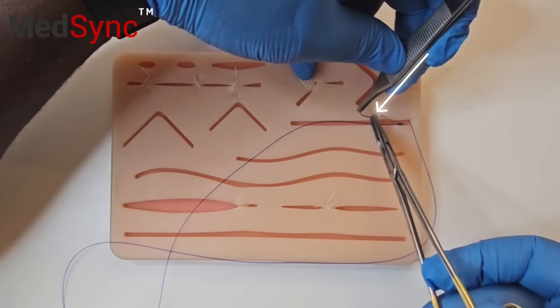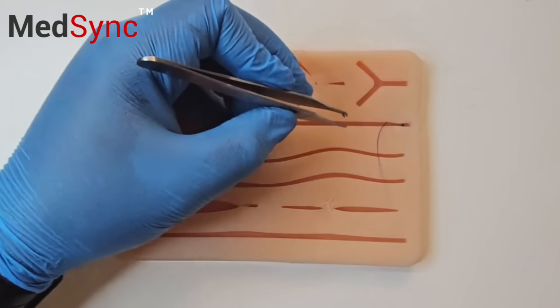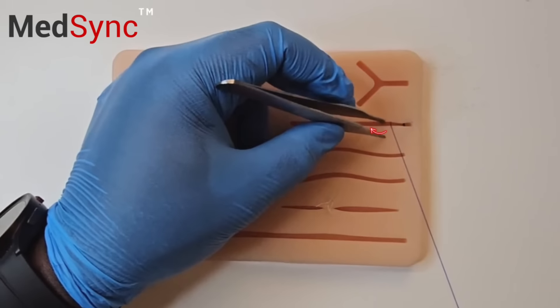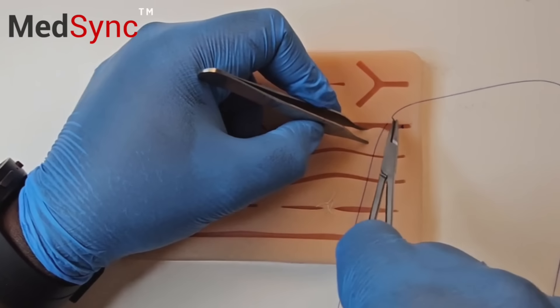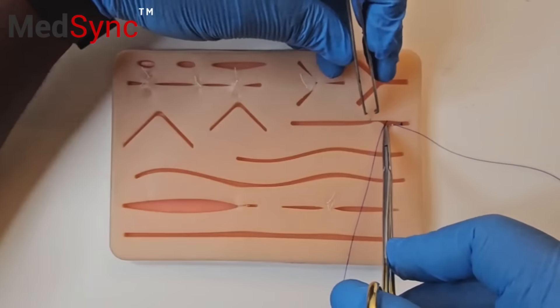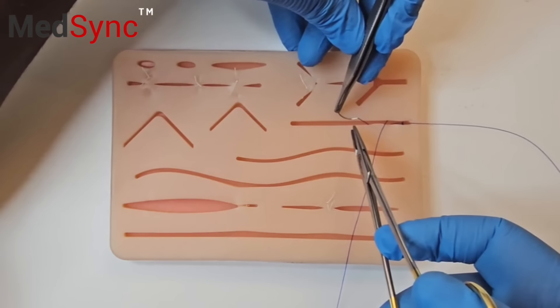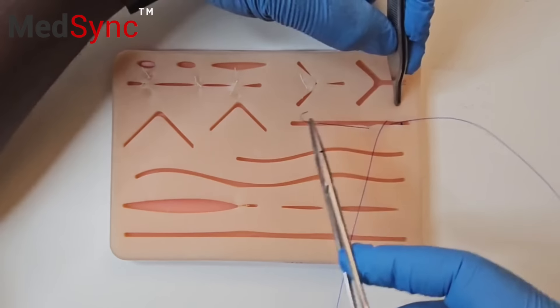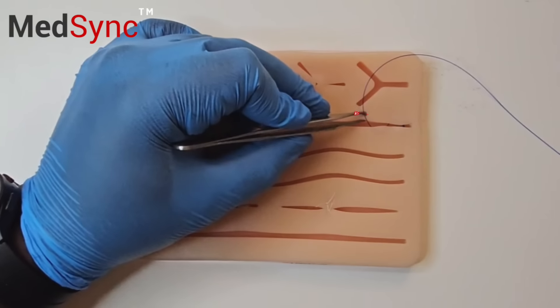Mount the suture straight away. Go in opposite where you came out. You stay as superficial as possible without seeing the suture pierce the epidermis. Mount it straight away. Go in opposite where you came out.